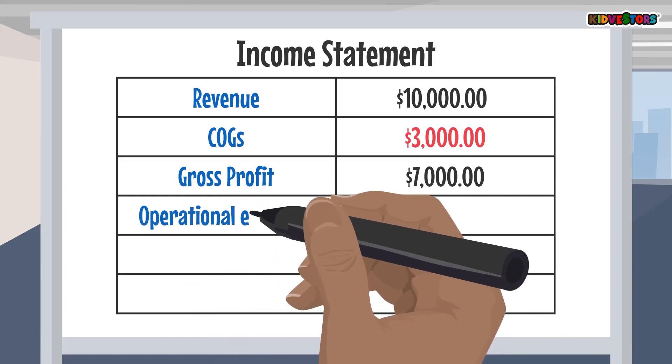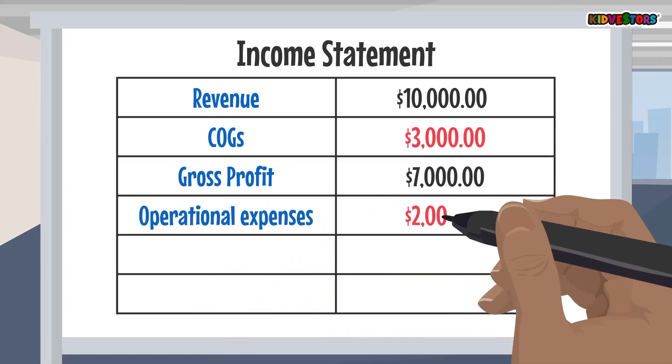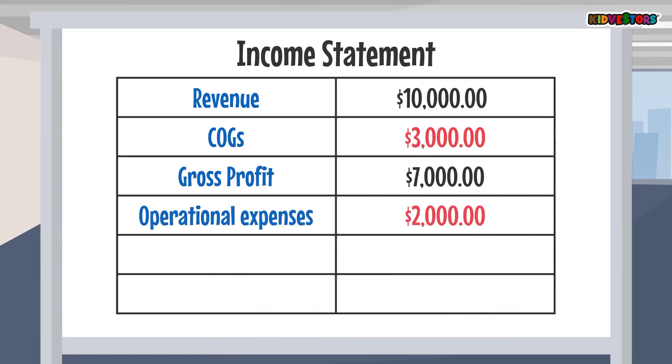Then you list all of your operational expenses, or overhead. This would include costs like advertising or your rent for your office space.